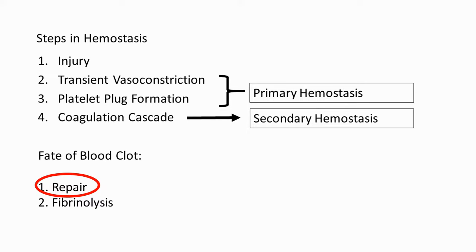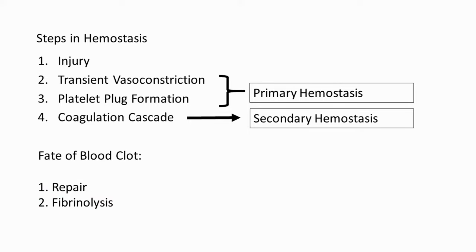Once the blood clot has been formed, it allows repair of the blood vessel and surrounding structures. After repair, fibrinolysis occurs to dissolve the blood clot. This is just a summary to give you a brief idea of what we'll be discussing. Before we jump into discussing these steps one by one, we need to understand what naturally keeps blood from coagulating.